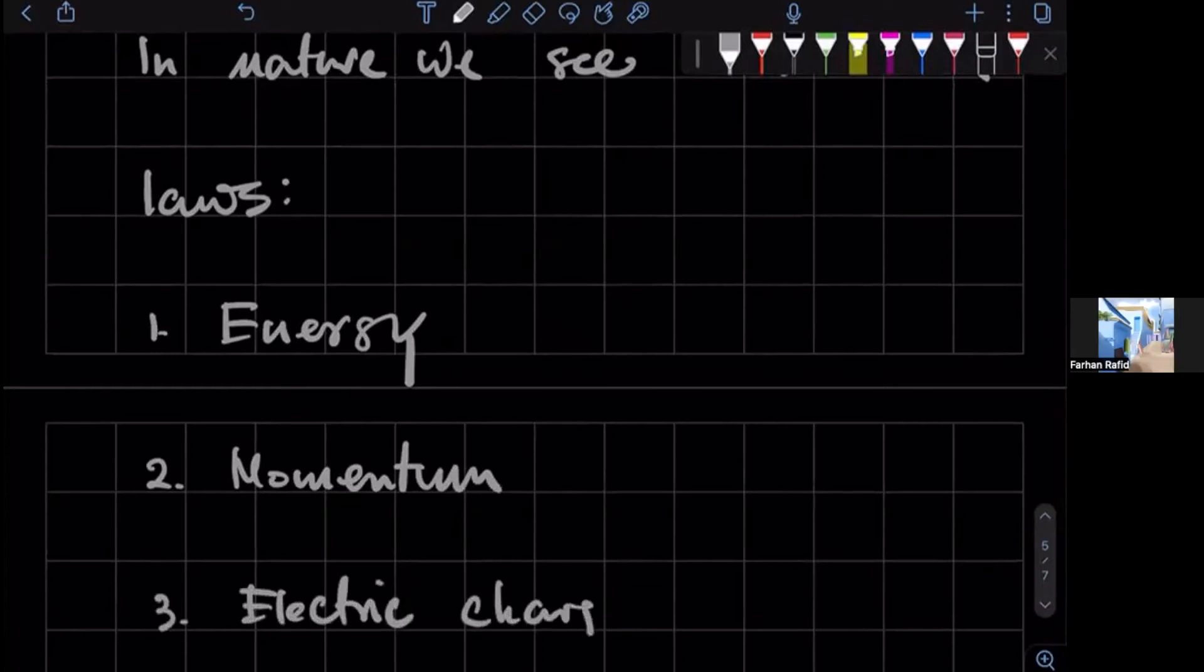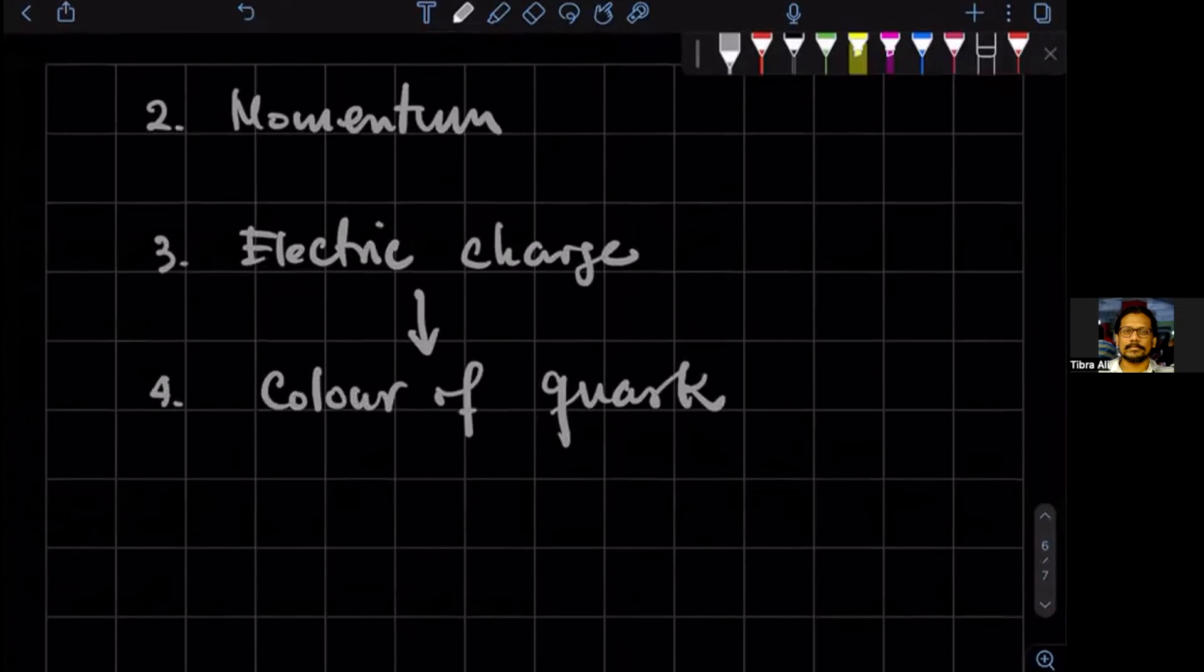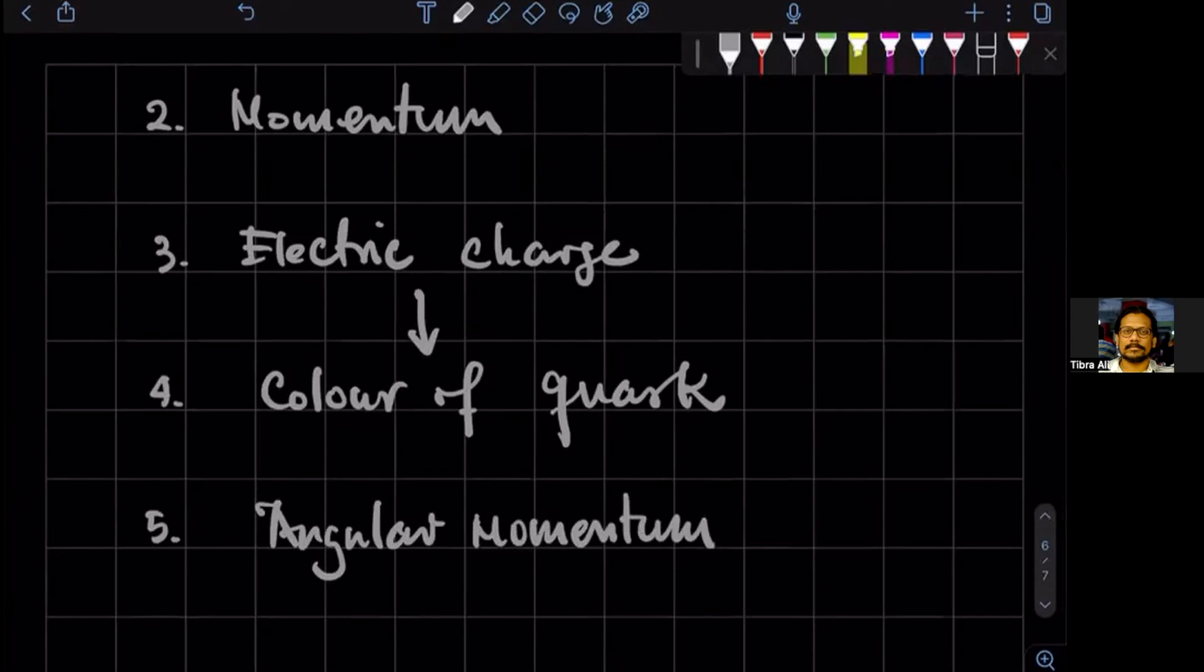Color of quark. Color of what? Quark. Quark. Okay, anything else? So this is basically a generalization of electric charge. What about angular momentum? Is that conserved? Yes.